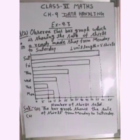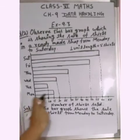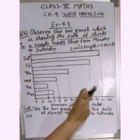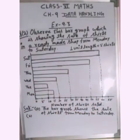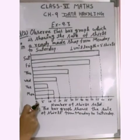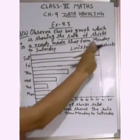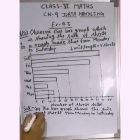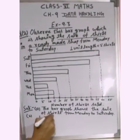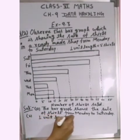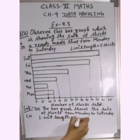Part B asks: What is the scale chosen on the horizontal line representing number of shirts? The answer is: 1 unit length is equal to 5 shirts.